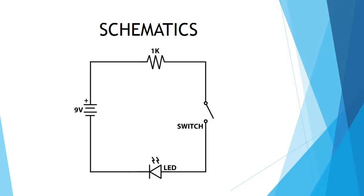Now that we know all of those different schematic symbols, we can see them in a circuit. We have our 9-volt battery, a 1,000-ohm or 1K-ohm resistor, a switch that turns our circuit on and off, and our LED. When the switch is open, current cannot flow through, so the LED is off. But if we close that switch, current can go through — because it's a closed circuit, it will light up the LED and keep going around in a circle.